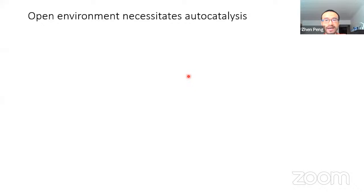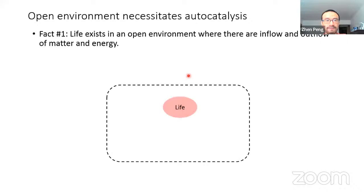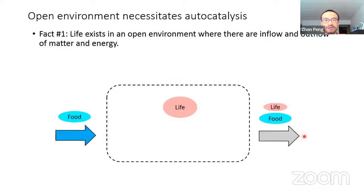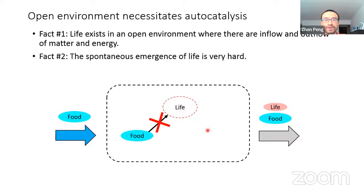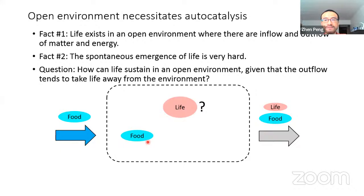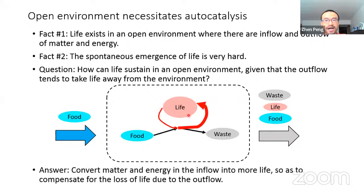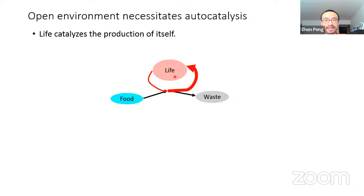To find such a mechanism, we decided to start with some known facts of life. First, life exists in an open environment where there is inflow and outflow of matter and energy. We know that the spontaneous direct emergence of life from food brought by the inflow is almost impossible — otherwise, the origin of life would not be such a complicated question. When outflow forever tries to take life away from the local environment, how could life sustain? Life must find a way to convert the matter and energy in the inflow to more life. In other words, life must catalyze the production of itself.